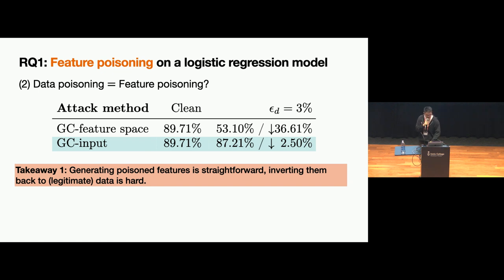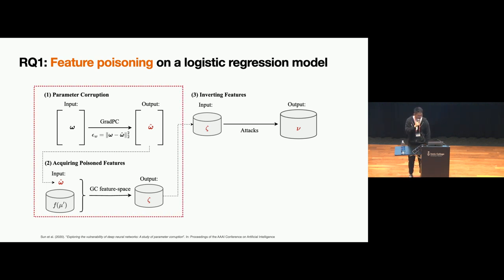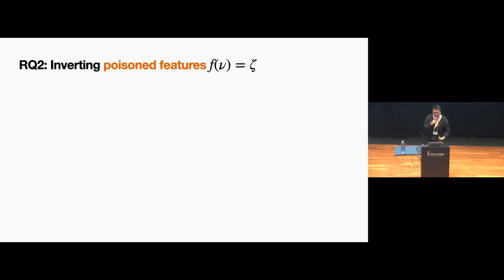This leads to the second part of the talk: inverting the features back. The GC feature space attack generates poison features zeta in two steps, which are a direct utilization of previous work. The next task is to invert this poison feature zeta back to the input space — what we call mu (the poison data) — such that its feature matches the target feature. We propose two new attacks: one more through intuition using an autoencoder, and another through direct optimization.